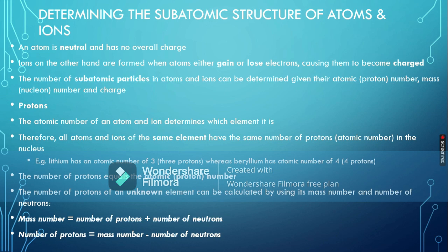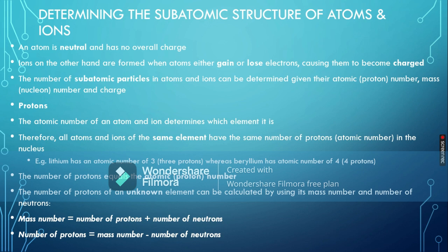From our previous videos we know that an atom is neutral and overall has no charge. The reason an atom is neutral is that it has an equal number of protons and electrons — protons are positively charged, electrons are negatively charged, and these charges cancel each other out, giving an overall zero charge. Ions, on the other hand, are formed when neutral atoms either gain or lose electrons. Ions have nothing to do with protons or neutrons.